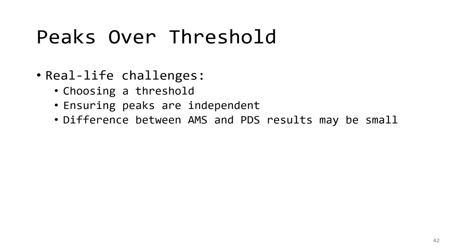There are three challenges in using peaks over threshold, or PDS, in real life. First is the problem of choosing a threshold. There's a trade-off between how high the threshold is and how many sample values you get. However, a higher threshold means better agreement with the generalized Pareto distribution for the resulting excesses. This sometimes requires iterative testing of the threshold and fit to find the sweet spot. Some studies have suggested choosing a threshold based on the resulting average number of events per year, or setting it equal to the minimum annual maximum value so that all data in the annual maximum series are contained in the peaks over threshold data as well.